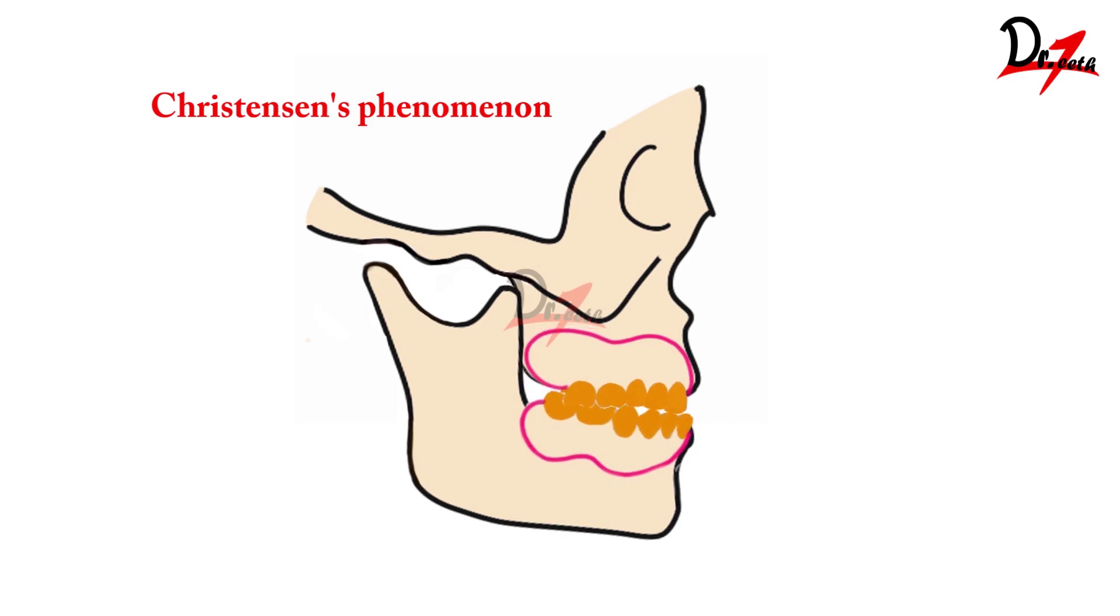This will not be balanced. So in complete denture we don't want spacing in any movement - whether it's protrusive, meaning whether the patient is bringing his mandible forward, or side to side, any movement we want to avoid spacing.